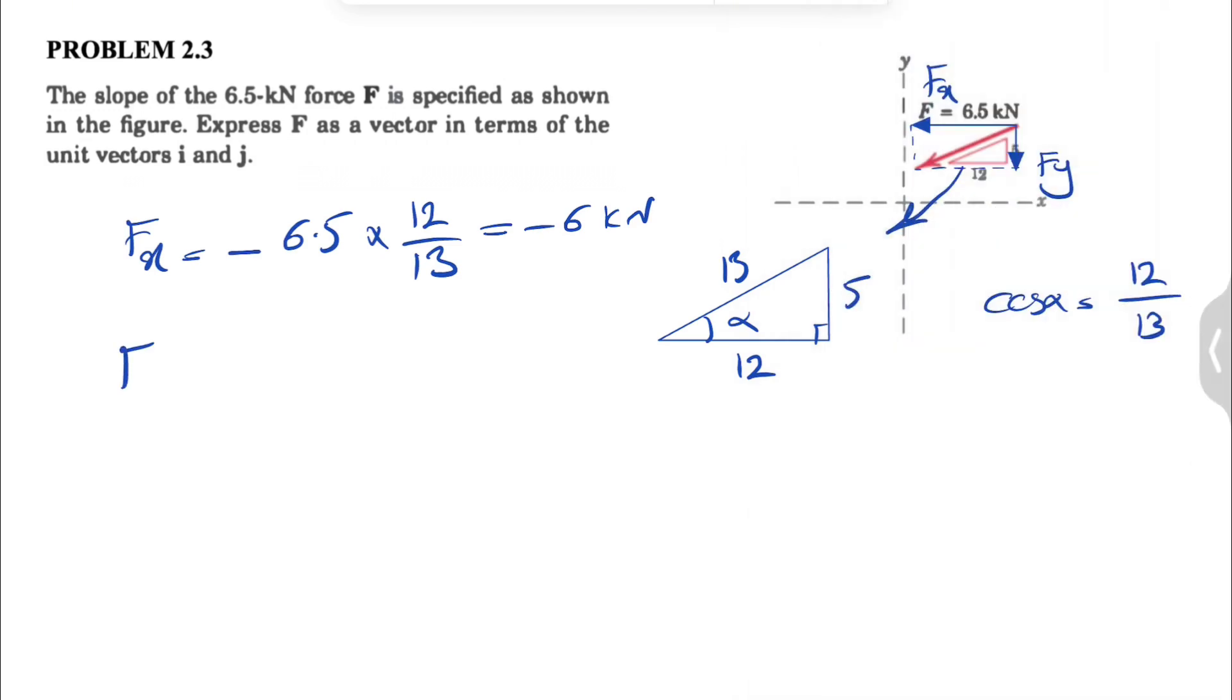And if you want to find the y component, Fy would be, again, since it's downward, it's going to be negative 6.5. And this time we'll have the sine of alpha.